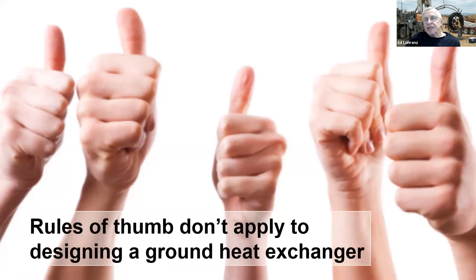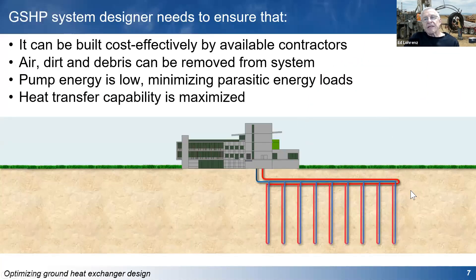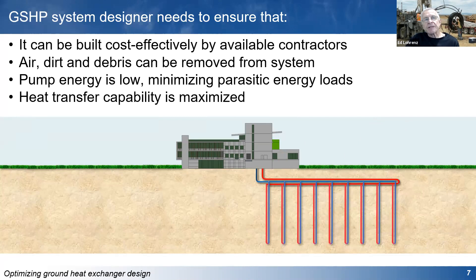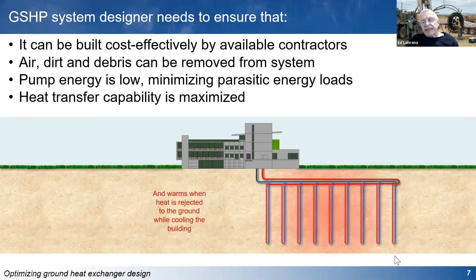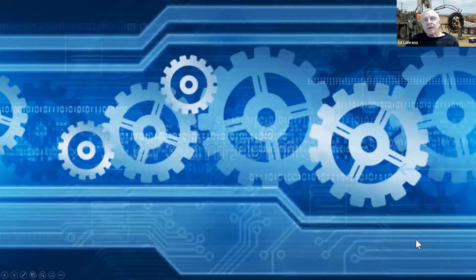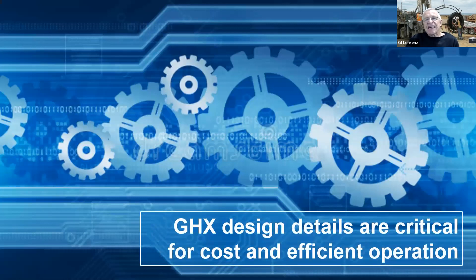Rules of thumb don't apply — same with ground heat exchanger design, same with building mechanical system design. That's simply because you are designing the energy source for the building. You need to design a system that can be built cost effectively by available contractors, that allows you to get the dirt, debris, and air out. You've got to minimize pumping energy and parasitic loads, and you want to maximize heat transfer capability. You're putting a lot of expensive pipe in the ground, and design details are critical for both cost and efficient operation over time.